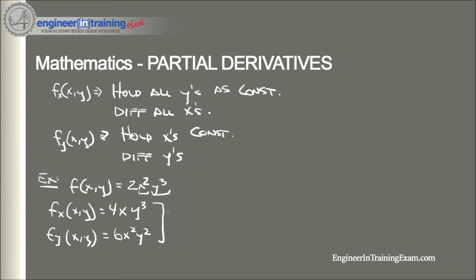These two partial derivatives are sometimes referred to as first-order partial derivatives. Just as with functions of one variable, we can have derivatives of all orders. The notation for partial derivatives is different than that for derivatives of a single variable. With single-variable functions, we denoted the derivative with f prime of x, f double prime of x, and so forth. However, with partial derivatives we always need to remember the variable we are differentiating for, and so we subscript that variable. Here we subscript x when differentiating with respect to x, and we subscript y when differentiating with respect to y.